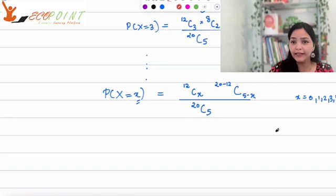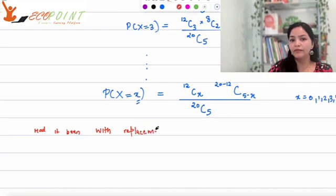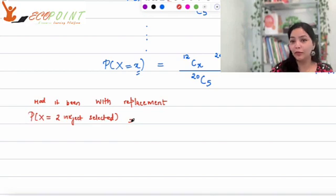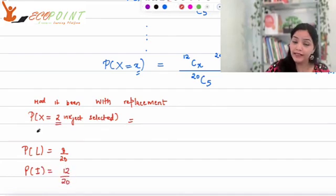Think about it. In this scenario, had it been given to you that whatever you are choosing the sample, whatever you are doing here is with replacement, had it been with the replacement, what would have been your probability of x equal to say two injects selected? If it would have been a with replacement case, then the probabilities would have been probability of laser would have been 8 upon 20 and probability of inject would have been 12 upon 20.